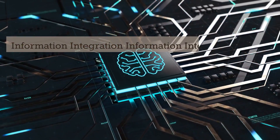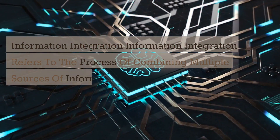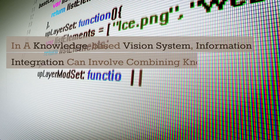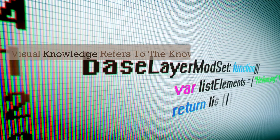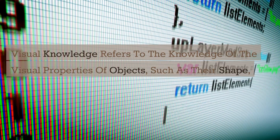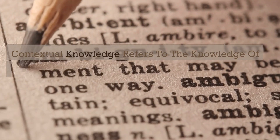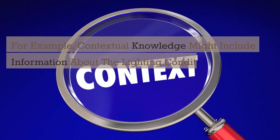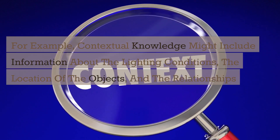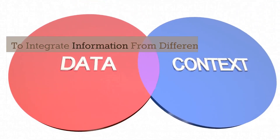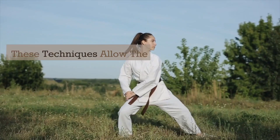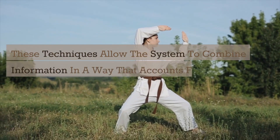Information integration refers to the process of combining multiple sources of information to improve the interpretation of visual information. In a knowledge-based vision system, this can involve combining visual knowledge and contextual knowledge. Visual knowledge refers to knowledge of the visual properties of objects such as shape, color, and texture. Contextual knowledge includes information about lighting conditions, the location of objects, and the relationships between them. Techniques such as Bayesian inference, fuzzy logic, or neural networks allow the system to combine information in a way that accounts for uncertainty and ambiguity.